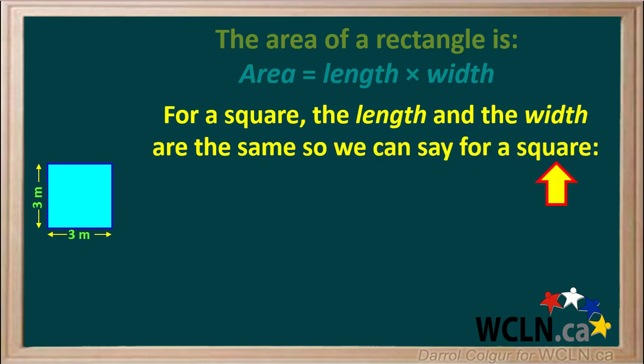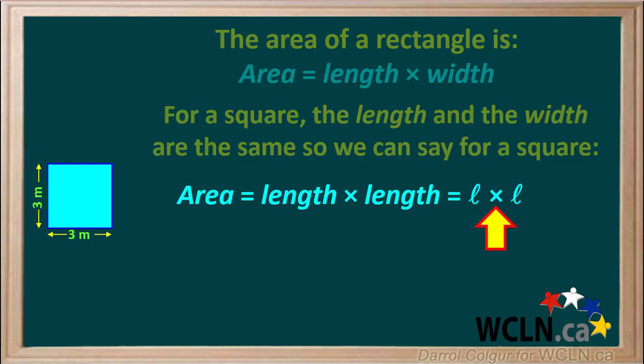So we can say for a square that the area is equal to length times length, or L times L, or L squared.